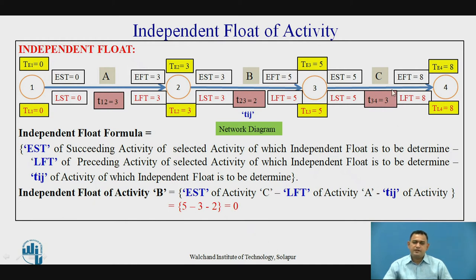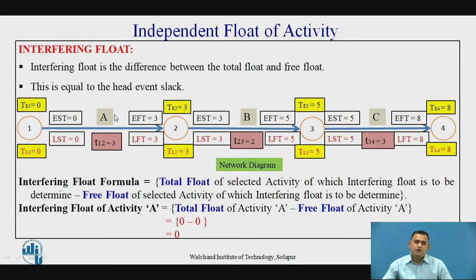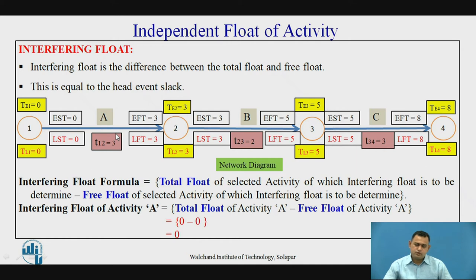The interfering float is the difference between the total float and the free float. It is equal to the head event slack. For activity A, the interfering float equals total float minus free float, which is 0 minus 0 = 0, because activity A is a critical activity.